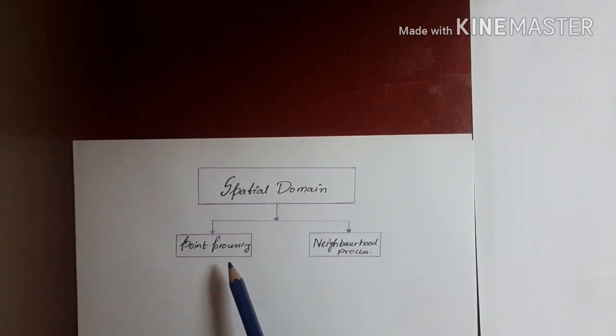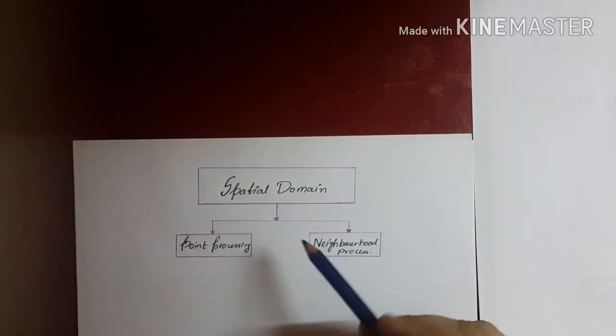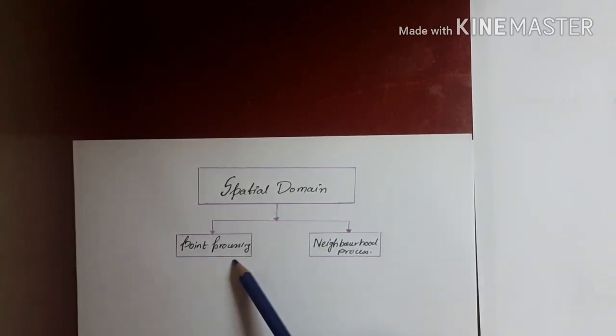We modify each pixel of the image. So, all procedures that we follow in point processing will be done for all the pixels in a given image.